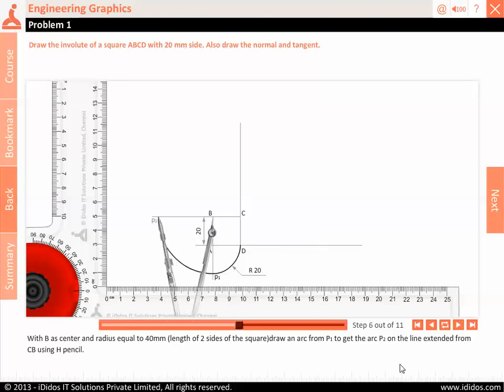With B as center and radius equal to 40 mm, length of two sides of the square, draw an arc from P1 to get the arc P2 on the line extended from CB using H pencil.